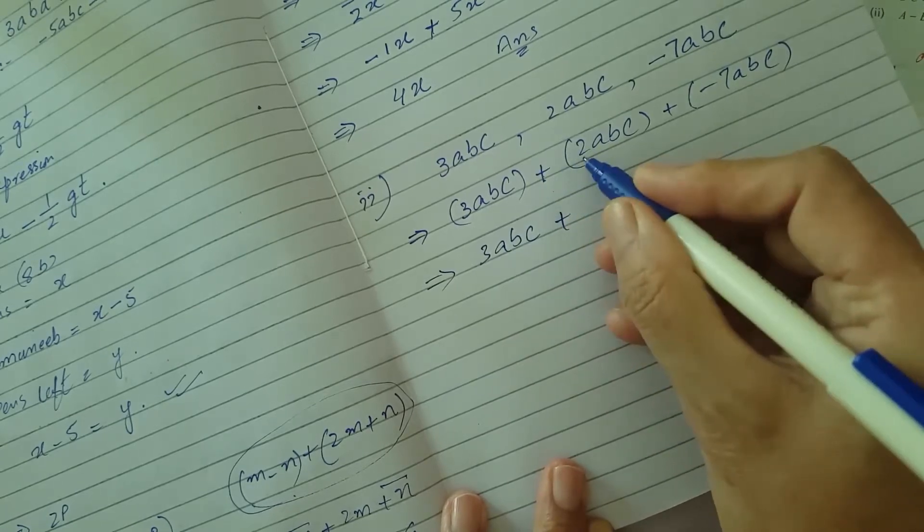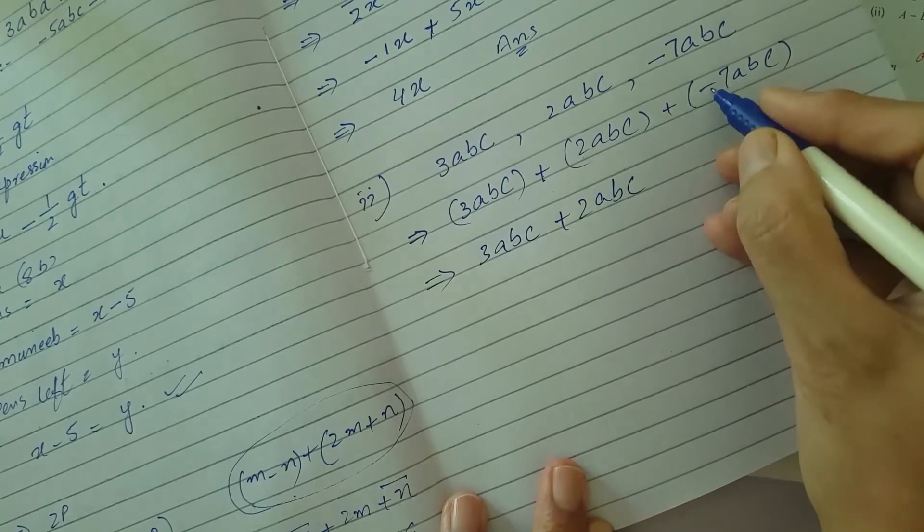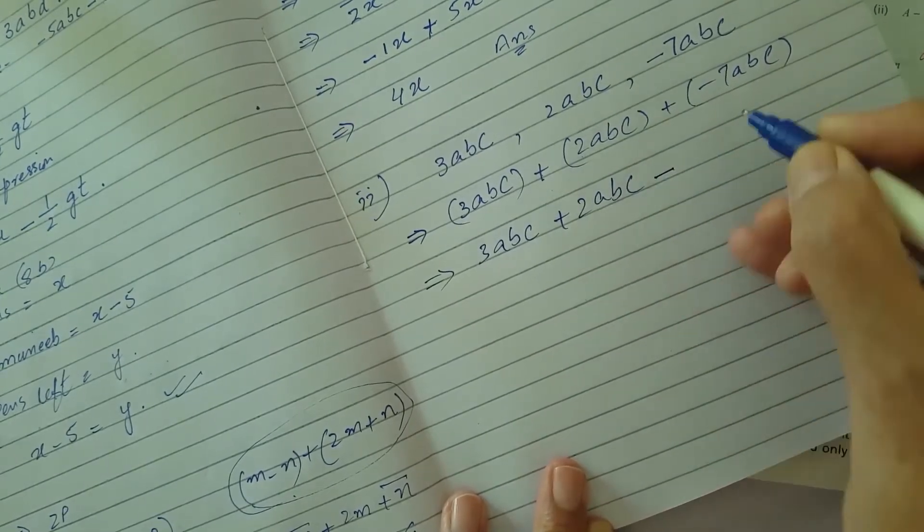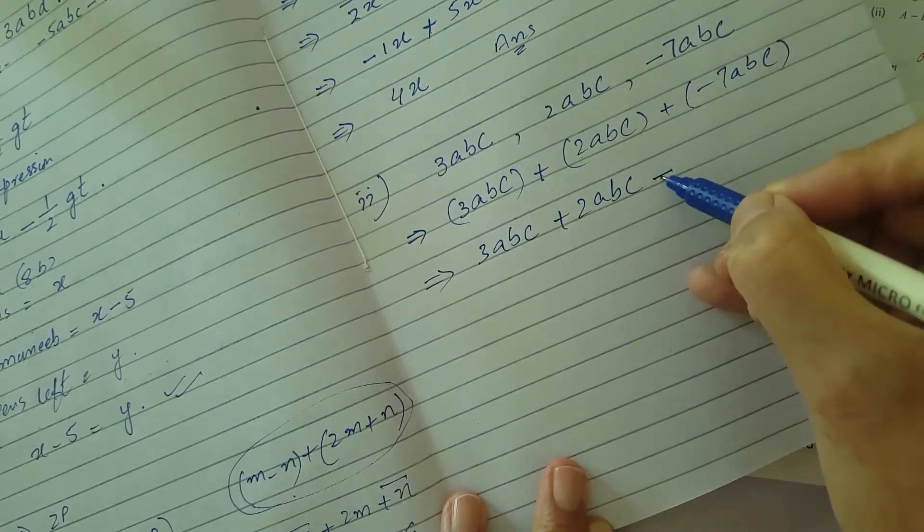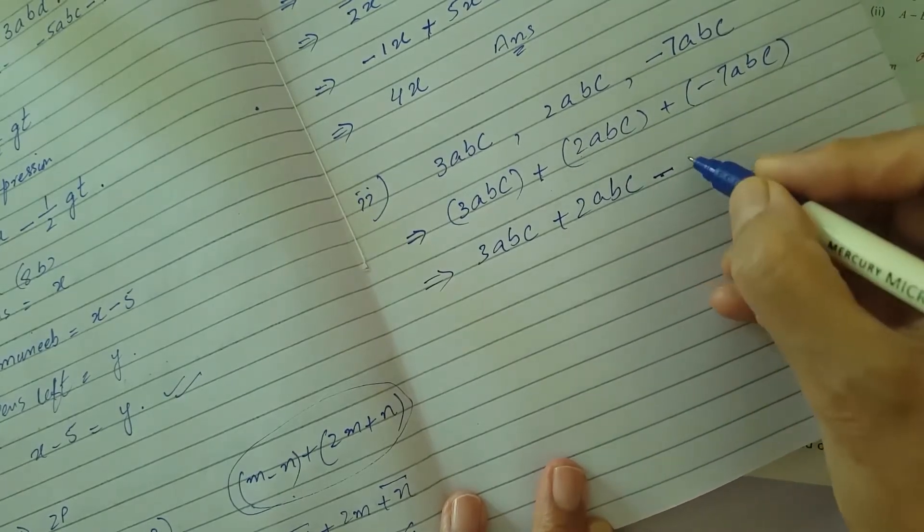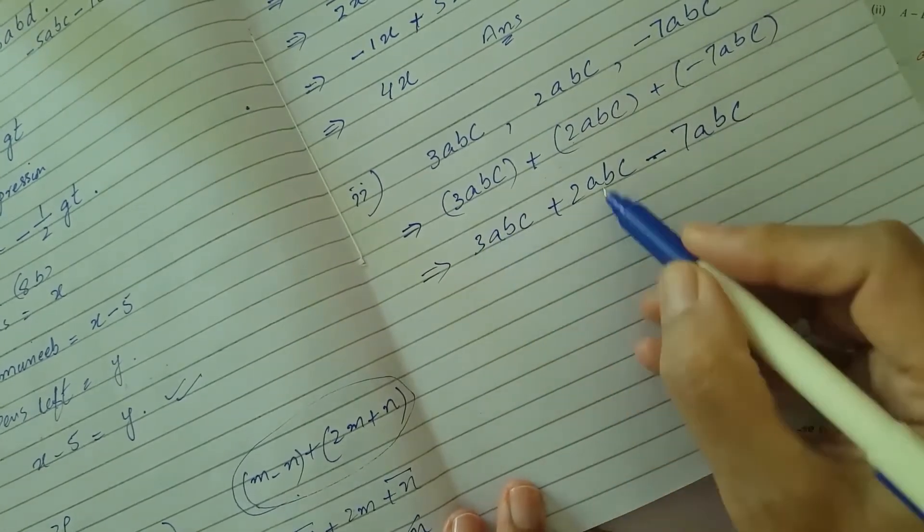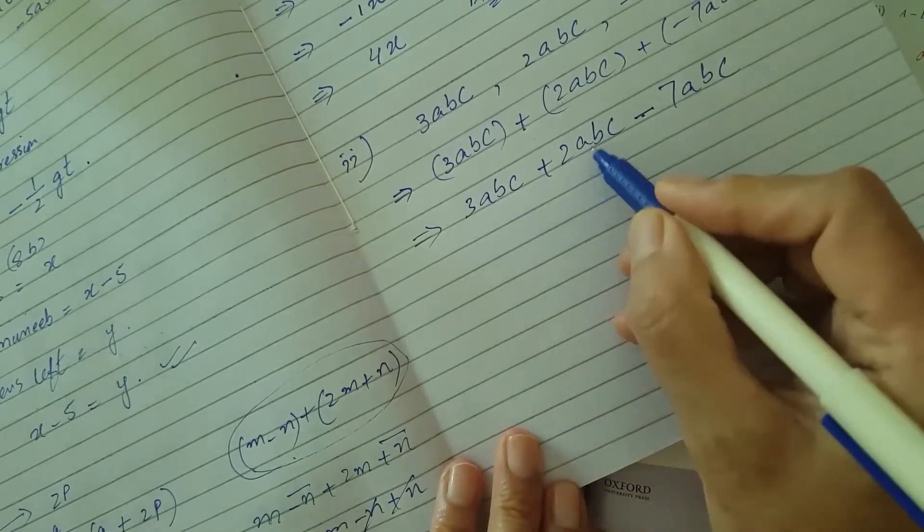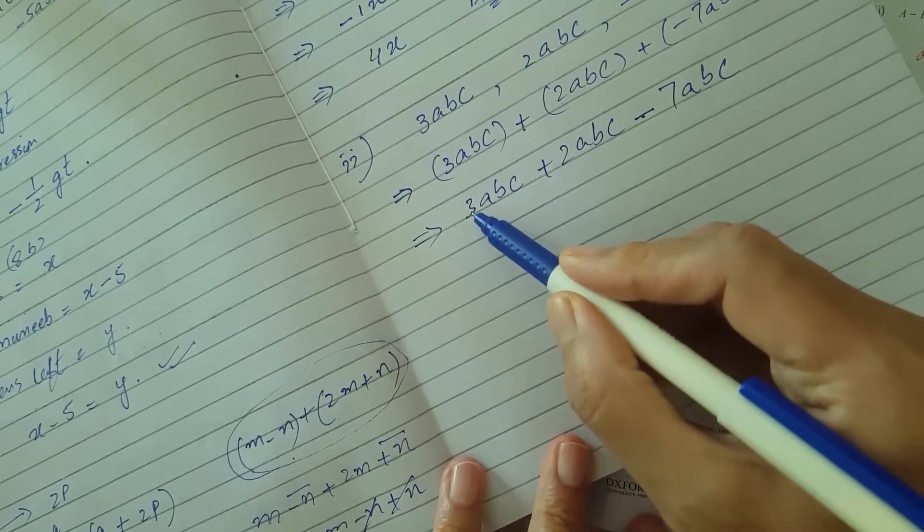3ABC added to, plus plus is plus, so out of bracket 2ABC. Plus minus - we will multiply these two opposite signs, we will get negative sign in the answer because plus minus opposite signs gives you minus sign. Minus 7ABC.